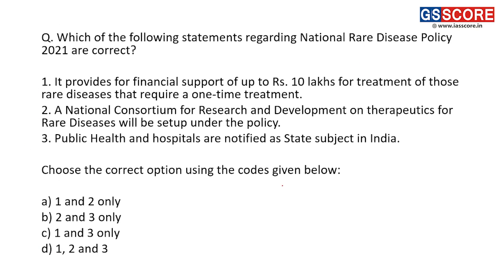Next question: which statements regarding the National Rare Disease Policy 2021 are correct? First statement: it provides financial support of up to rupees 10 lakhs for treatment of rare diseases requiring a one-time treatment — this is incorrect. For rare diseases requiring one-time treatment, a grant of rupees 20 lakhs is provided, not 10 lakhs. So the first statement is incorrect.